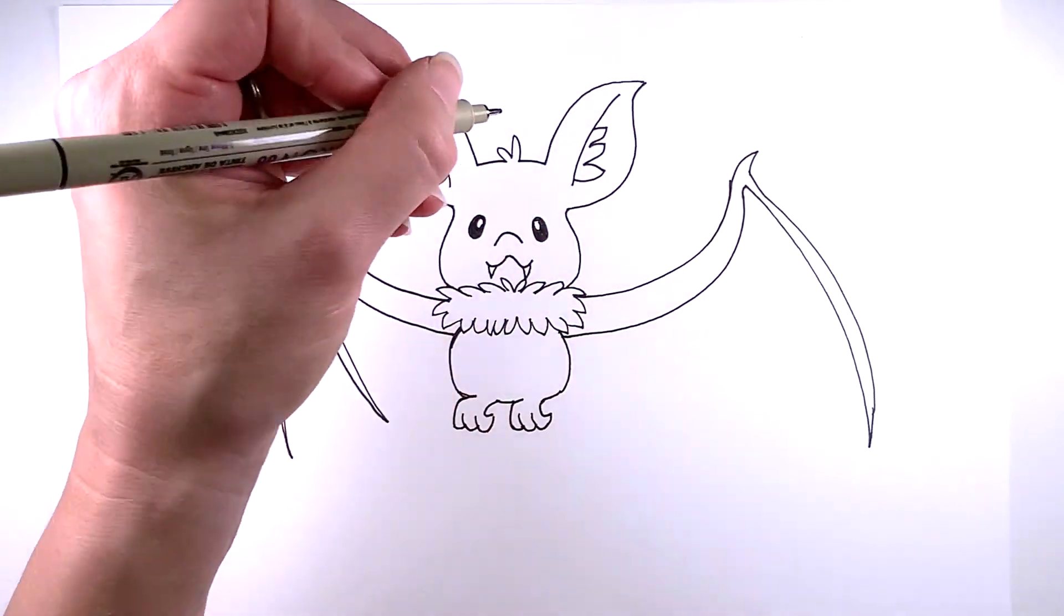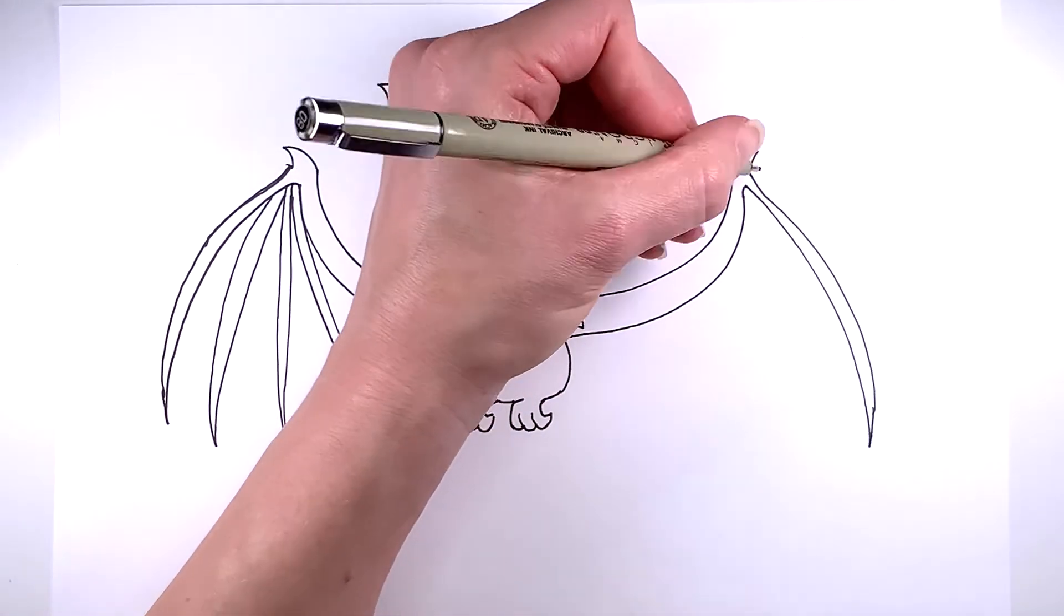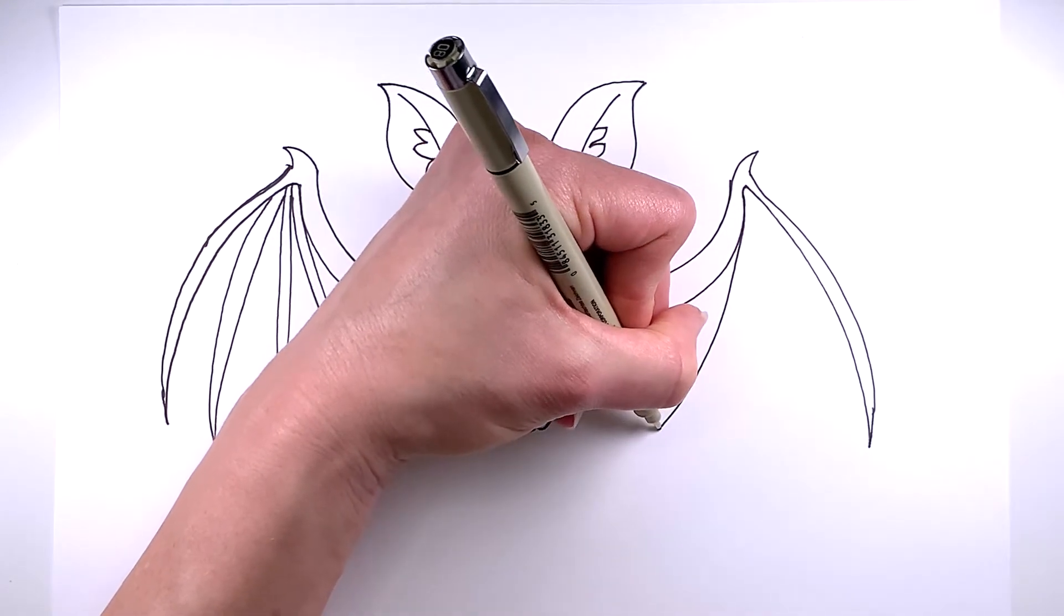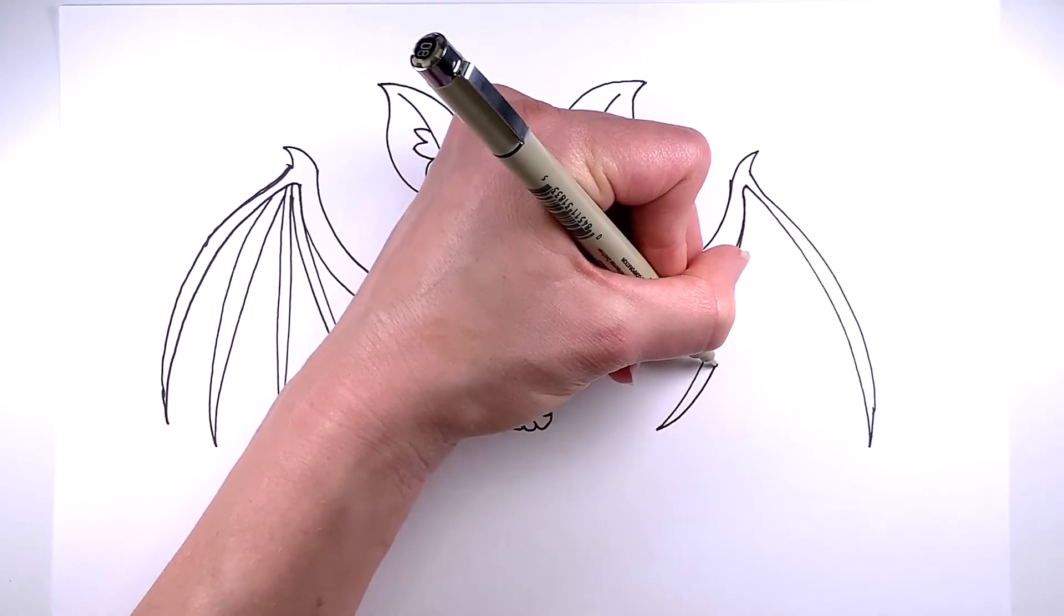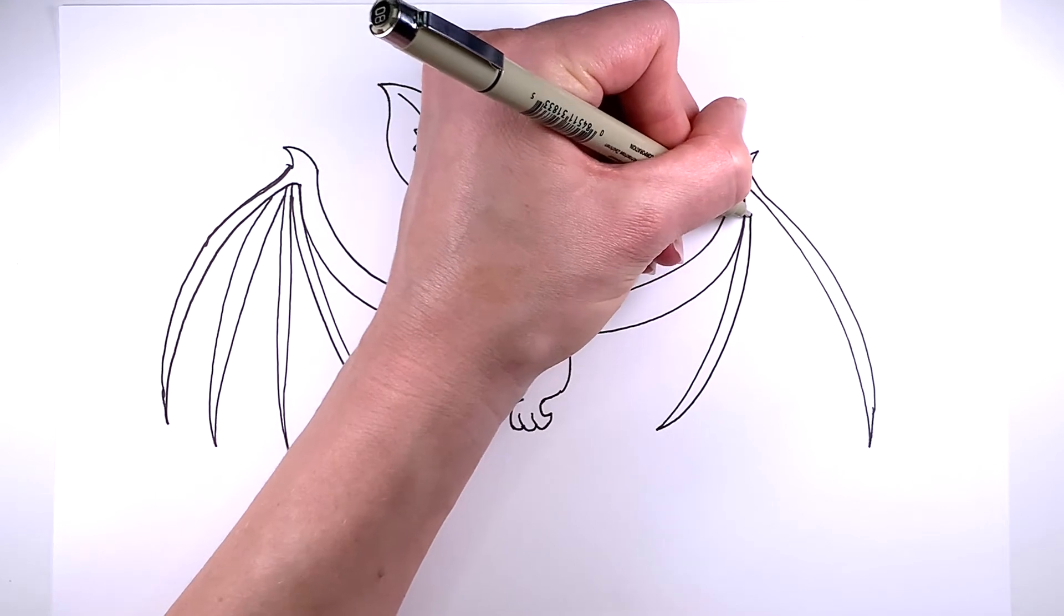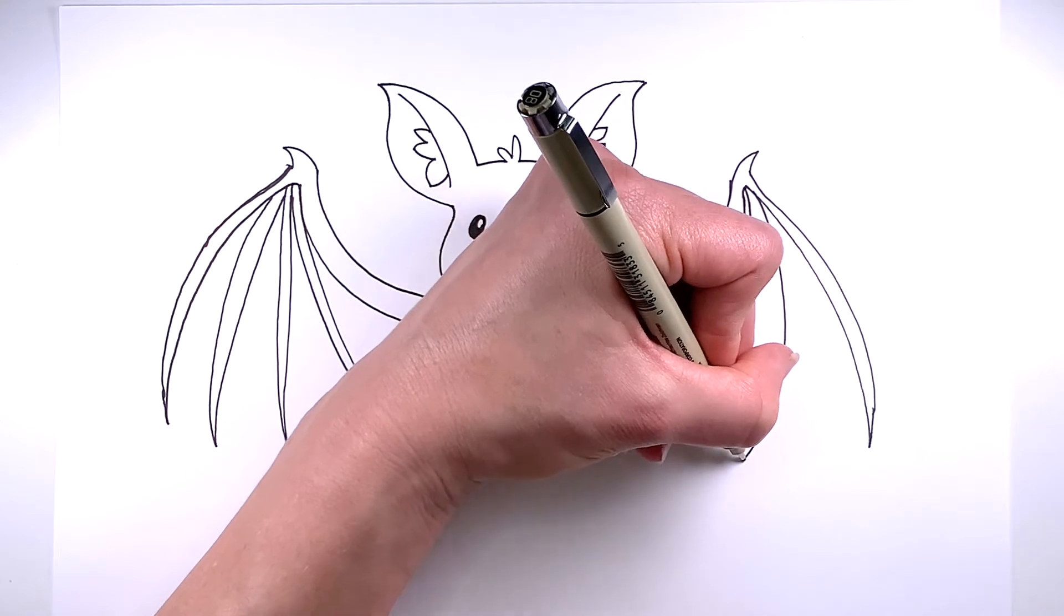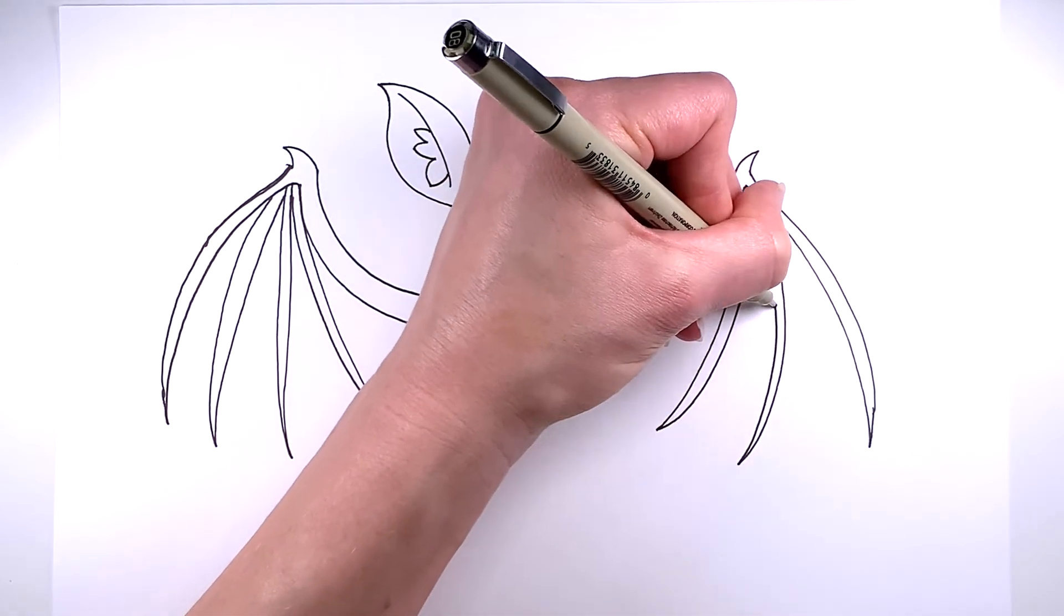And now I'm going to go to the other wing and just repeat the same process. And I'm doing three bat fingers, I guess is what I'm going to call it. So three for each side.